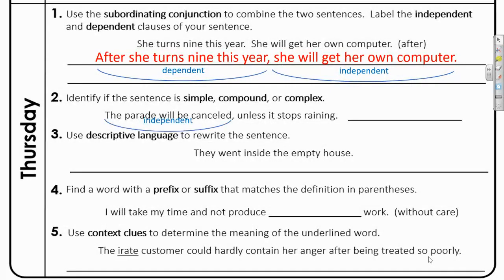The other part is 'unless it stops raining.' Could you use that as a complete sentence? Hopefully you're thinking no — that's a fragment, that is a dependent clause. And remember, when you have an independent mixed with a dependent clause, like number one and number two on this page, these sentences are both complex, because it's a mix of independent and dependent.